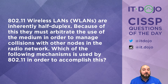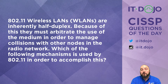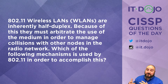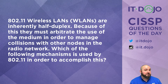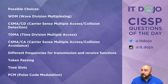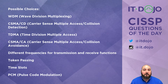Question number two. 802.11 wireless LANs are inherently half duplex. Part of this means that they have to arbitrate the use of the medium in order to avoid collisions on the network. Now, of the following techniques that are listed, which of them is the mechanism employed by 802.11 wireless LANs in order to arbitrate the use of the medium and avoid collisions in the radio network? Go ahead and give those a thought. Click pause if you need to. When you're ready, click play and we'll break it on down.